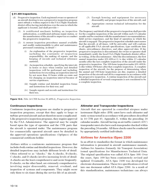Altimeter and transponder inspections: Aircraft operated in controlled airspace under instrument flight rules (IFR) must have each altimeter and static system tested per 14 CFR Part 43 Appendix E within the preceding 24 calendar months. Aircraft with an Air Traffic Control (ATC) transponder must also have each transponder checked within the preceding 24 months. All these checks must be conducted by appropriately certified individuals.